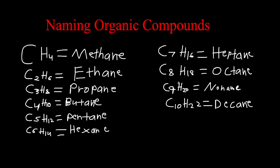So now we know that for the first one we have methane. Keep in mind that 'meth' would mean one, and '-ane' would mean a single bond — just a straight line. 'Eth' would mean two, and '-ane' would just mean single bond. So all of them end in '-ane,' meaning they all have only a single bond.